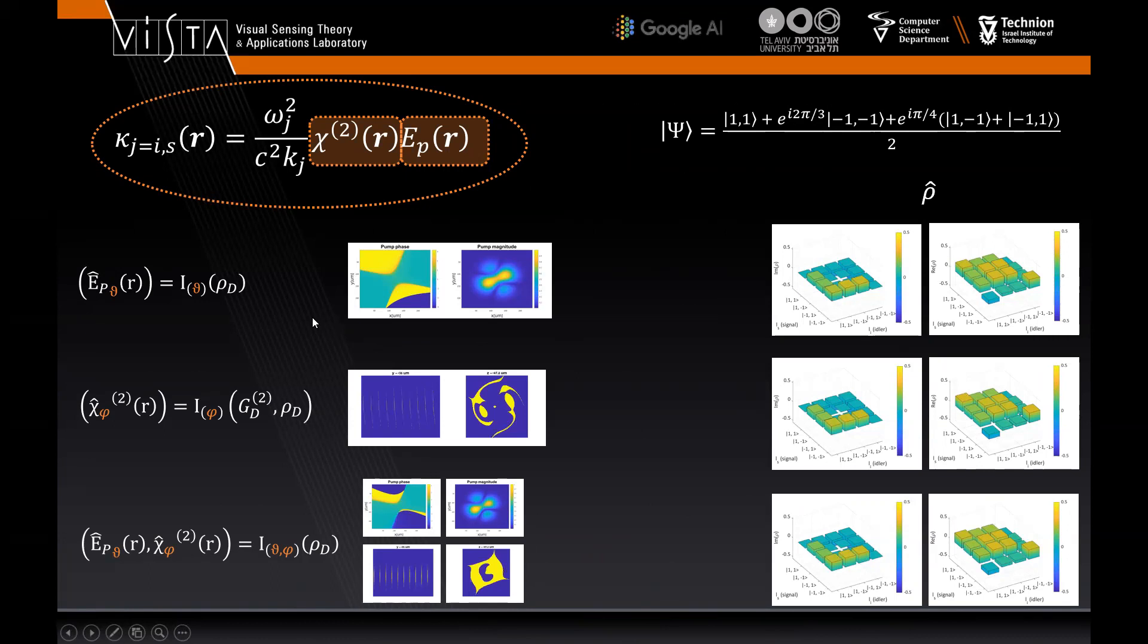In the first example, we take the 3D crystal hologram to be a Gaussian and we learn the pump structure that will yield the density matrix corresponding with the quantum state. We then use the parameters to observe the approximated density matrix as can be seen. Next, we show an example where we take two observables, the density matrix as well as the coincidence rates, and we learn the crystal while taking the pump to be a Gaussian.